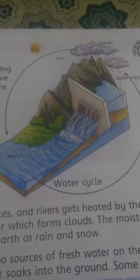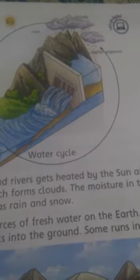The water in seas, lakes, and rivers gets heated by the sun and becomes water vapor, which forms clouds. The moisture in the clouds falls back on earth as rain and snow. Rain and snow are two sources of fresh water on the earth.